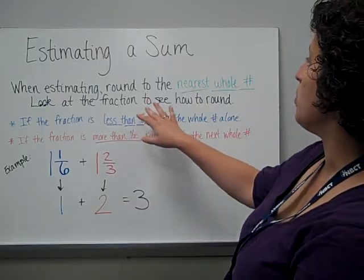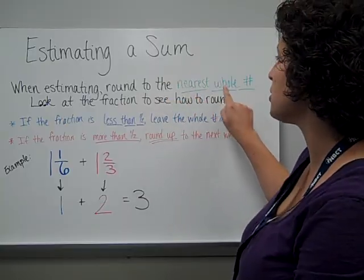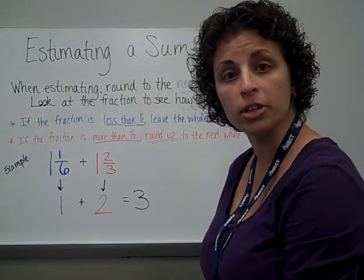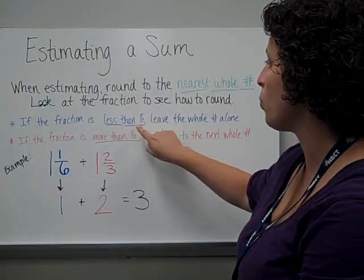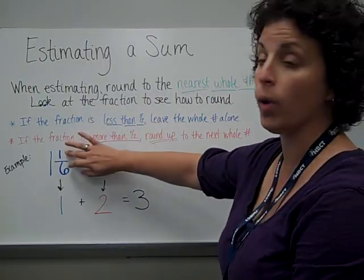To estimate a sum, we're going to round to the nearest whole number. And to decide how to round, we're going to look at the fractions. If the fraction is less than 1 half, like 1 6th,